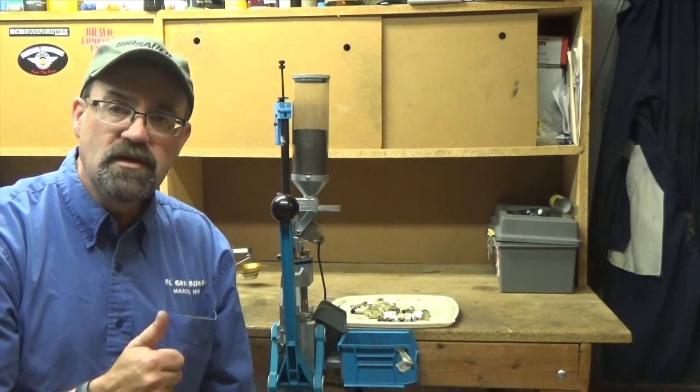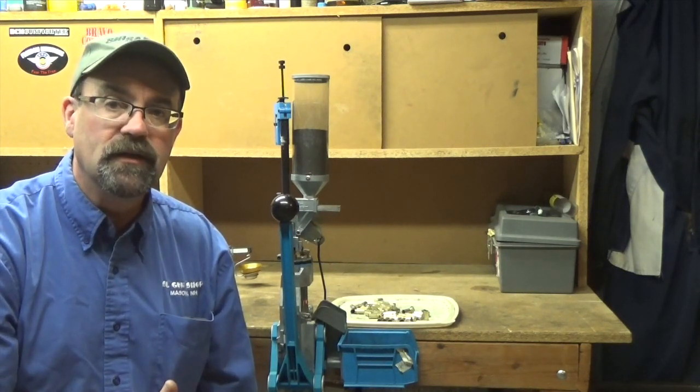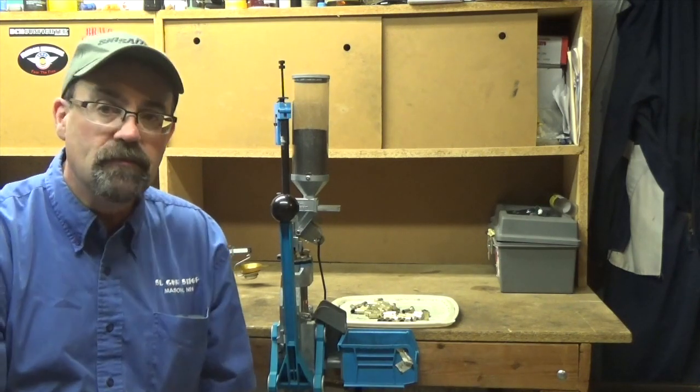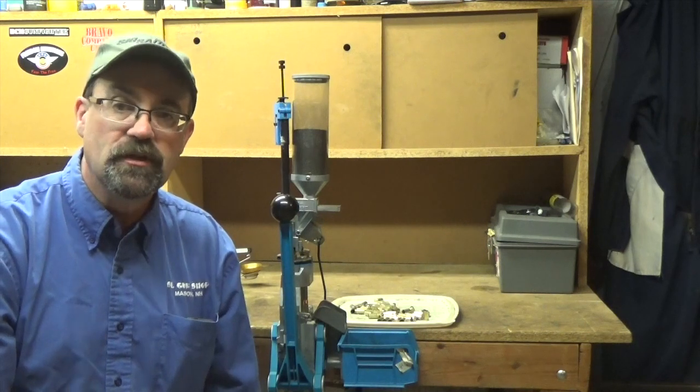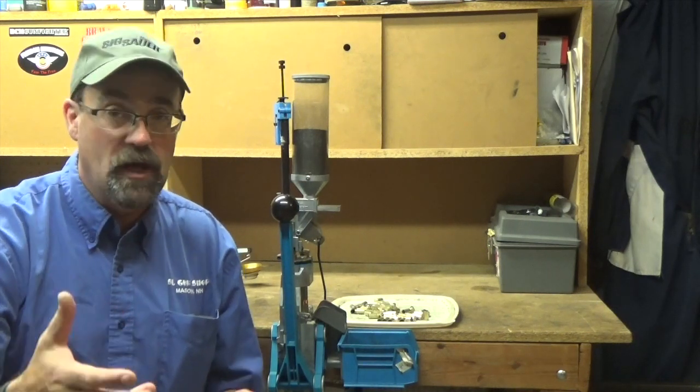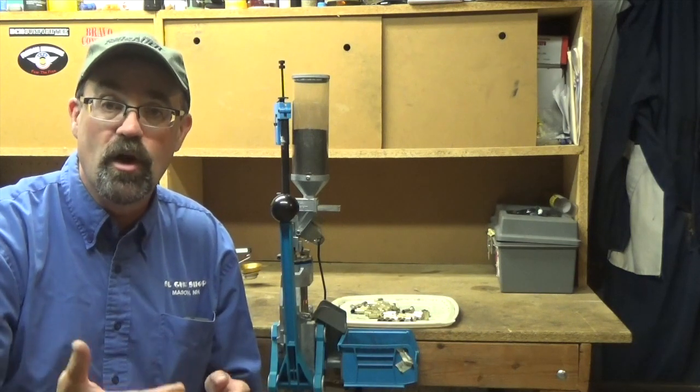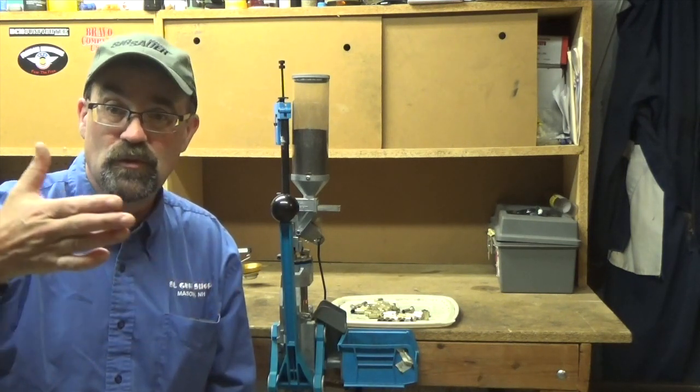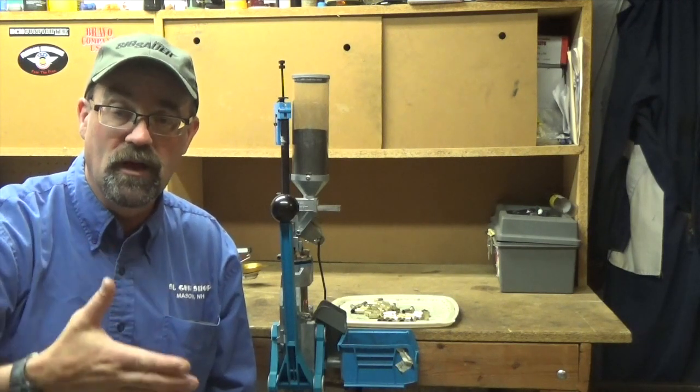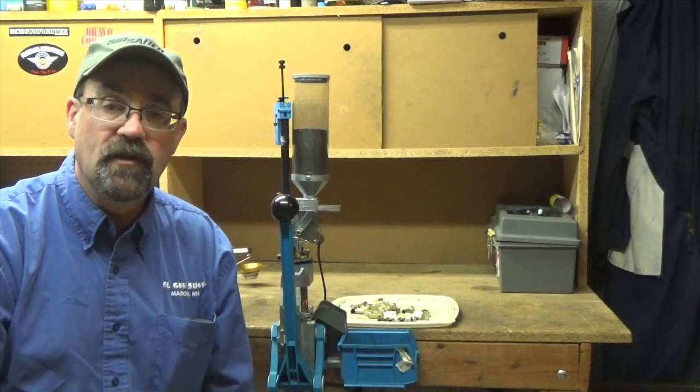So I wanted to talk today about shooting more economically. We're going to talk about 9mm rounds. Depending on how you buy your ammunition, you can buy it obviously by the box in a retail environment and pay, depending on where you get it, somewhere between maybe $12 up to $20 for 50 rounds. With reloading, you can cut that cost significantly.